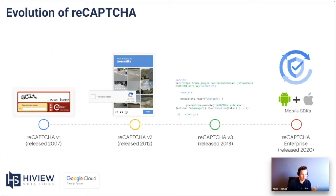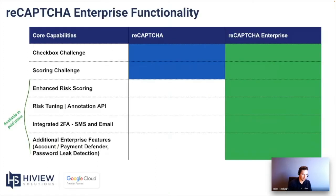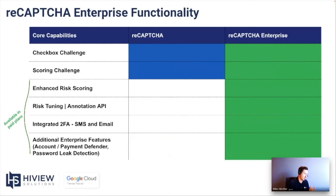Some additional features we'll go through today are specific to ReCAPTCHA Enterprise: enhanced risk scoring, risk tuning (also called the annotation API), and integrated two-factor authentication. We'll also touch on more advanced features. Note that you cannot self-service and sign up for these — you need to move to a ReCAPTCHA Enterprise paid plan and go through a security review with the Google ReCAPTCHA team in order to unlock the features we're going to be talking about.